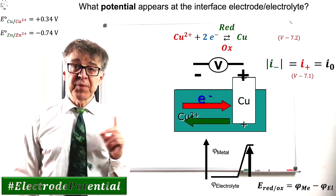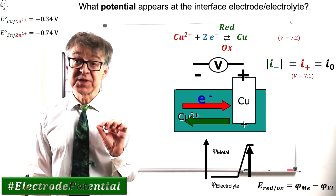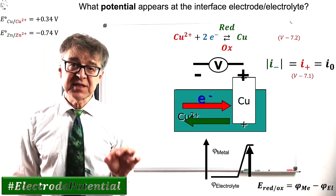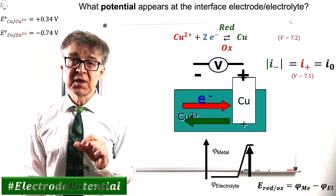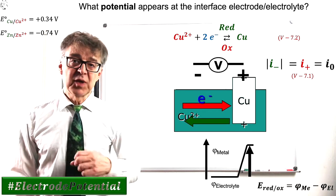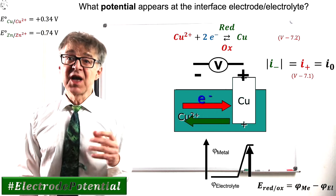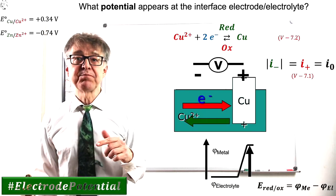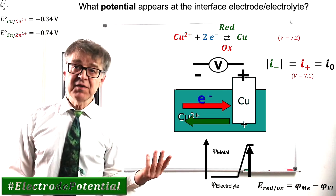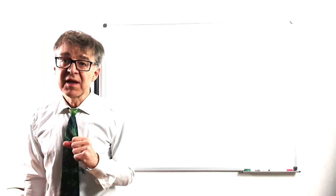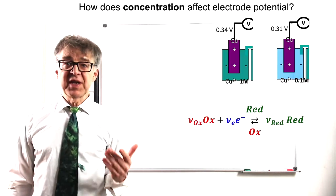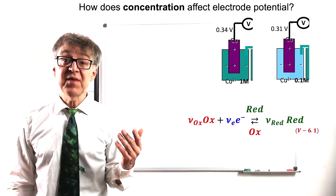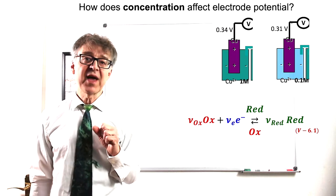If we were to repeat the immersion experiment with zinc metal and zinc chloride solution, we would get a negative electrode potential. Zinc is easily oxidized, the equilibrium of the electrode reaction lies to the left. The potential of an electrode depends both on the species involved in the electrode reaction and on their concentrations.